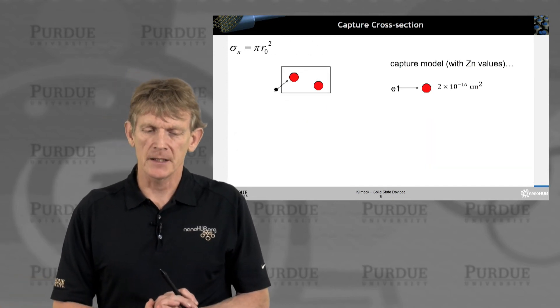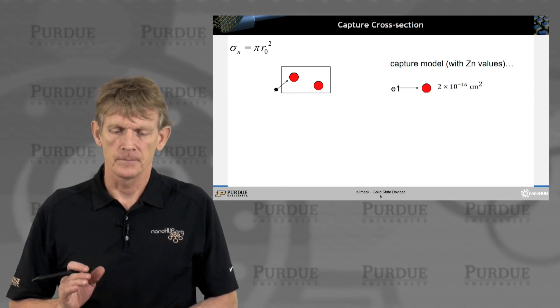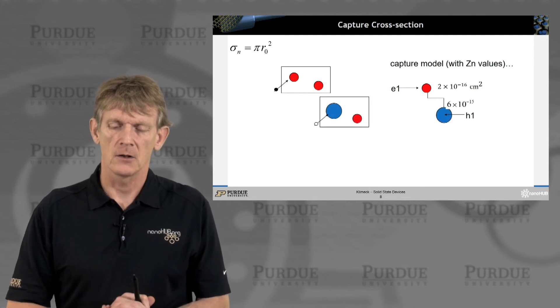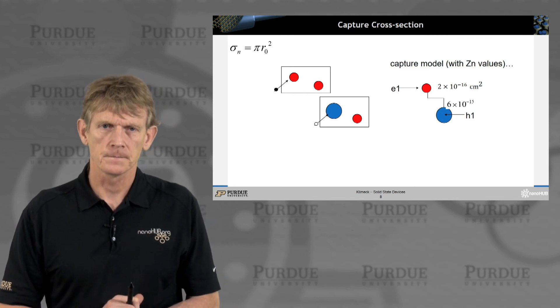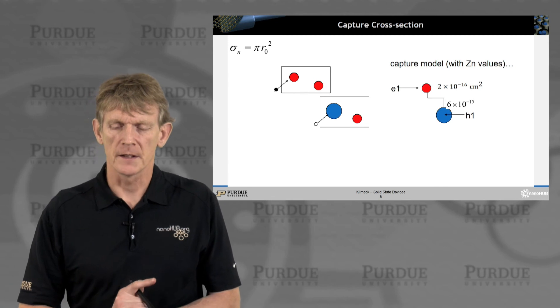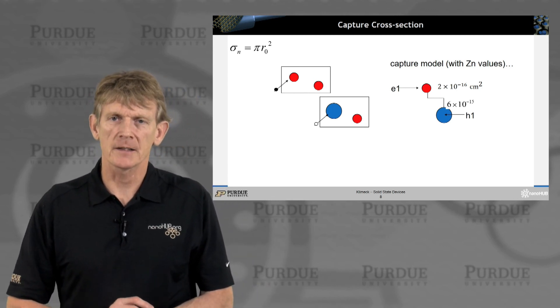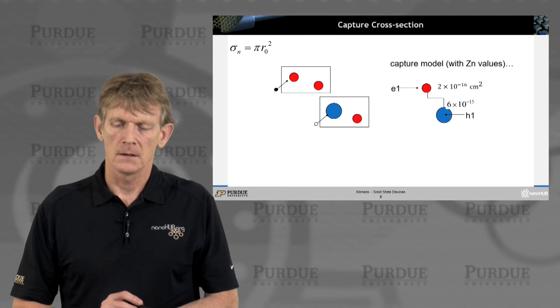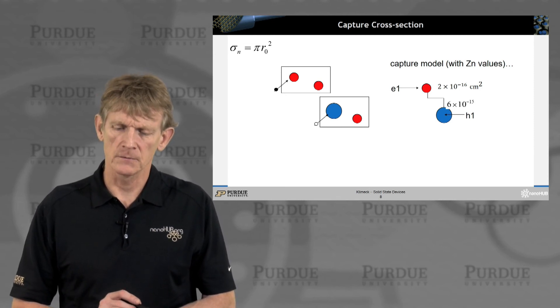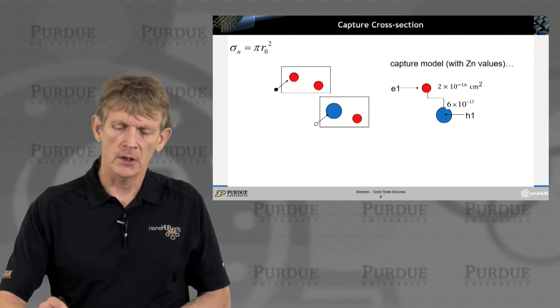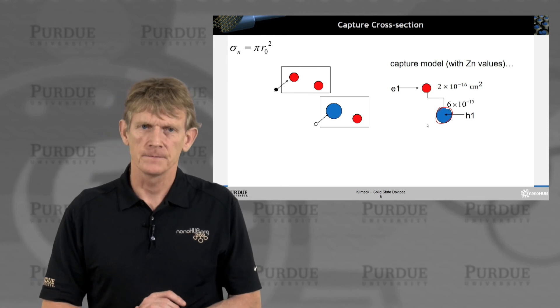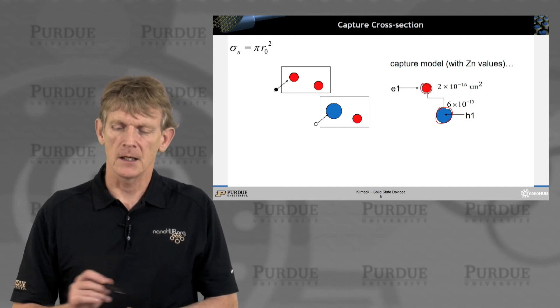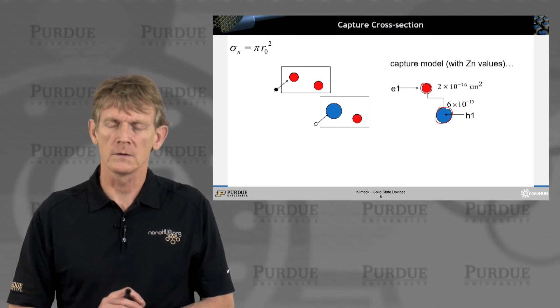Now, let's imagine we have this acceptor, this trap, and it has a cross-section of 10 to the minus 16. So, let's assume it's empty, and it now gets filled with an electron. Now, it would like to attract a hole. And it turns out that the hole capture rate is not quite a factor of 10 larger. It's actually a factor of 10 larger. So, the cross-section here is larger. So, this electron hit an empty trap, filled it, and now there's a larger cross-section for a hole to come in. Now, these values can be measured, and they have been measured.